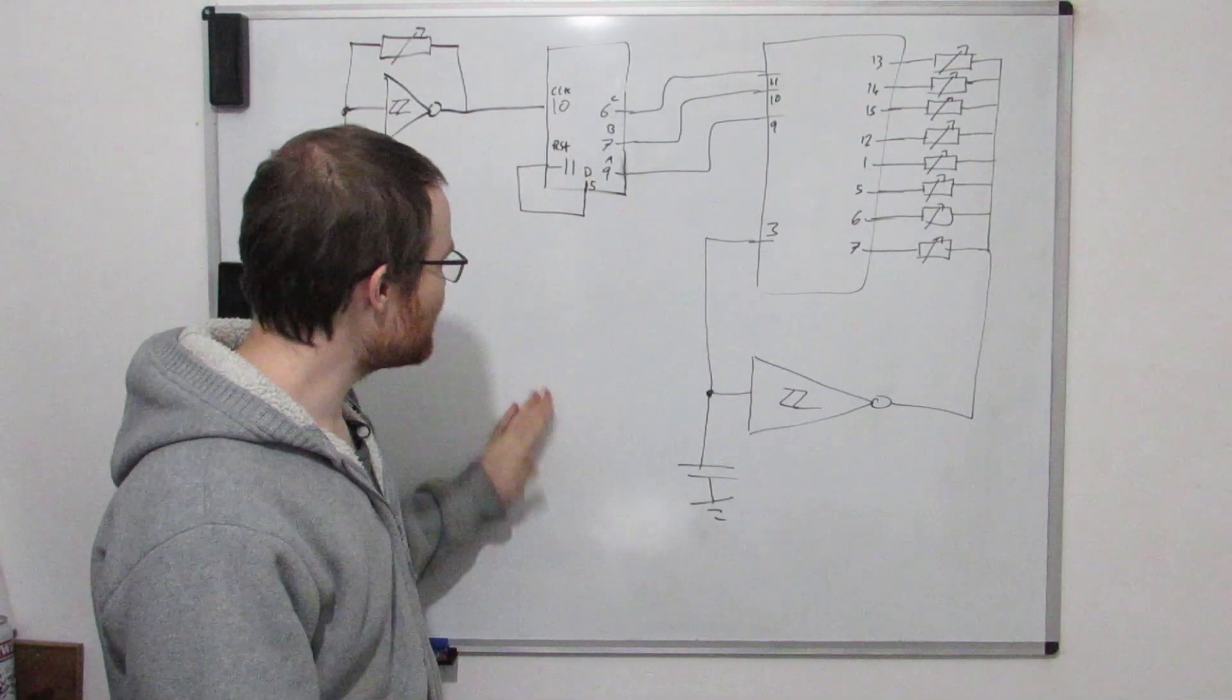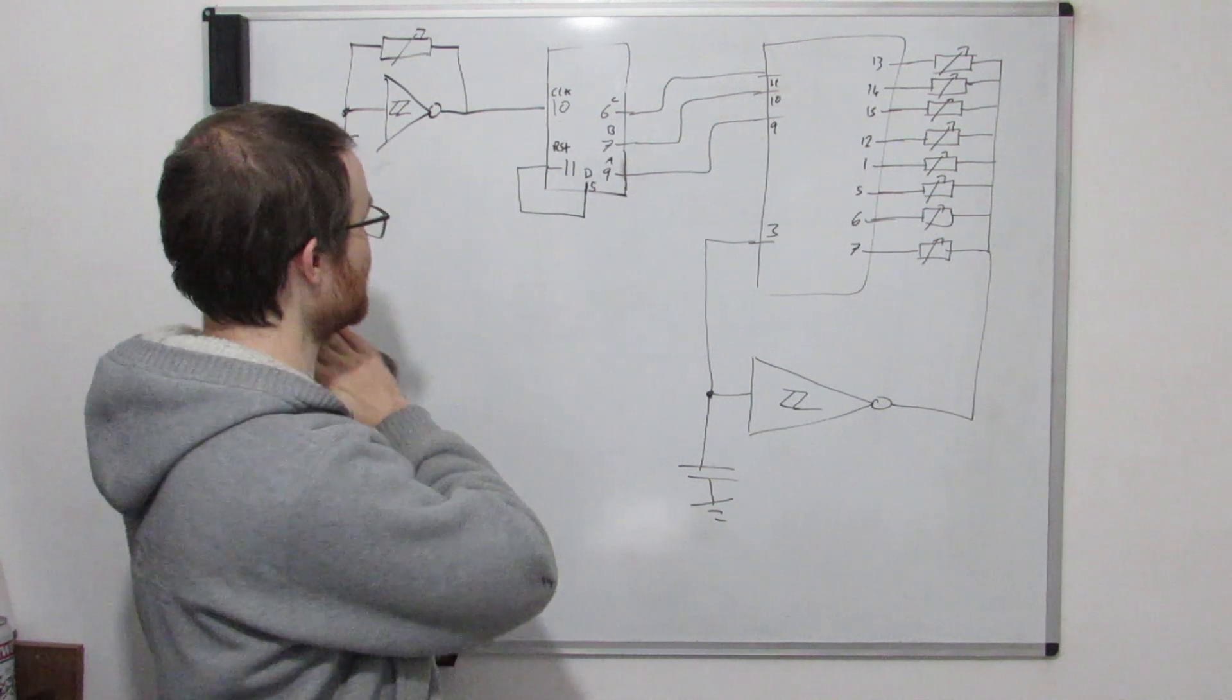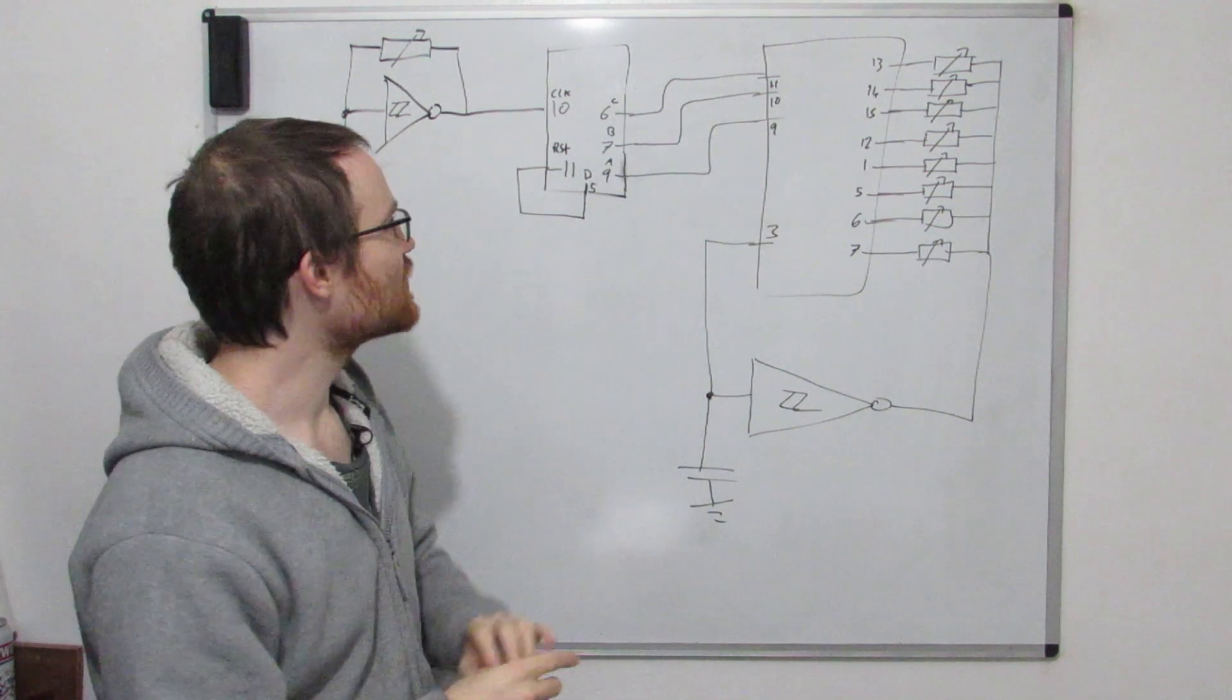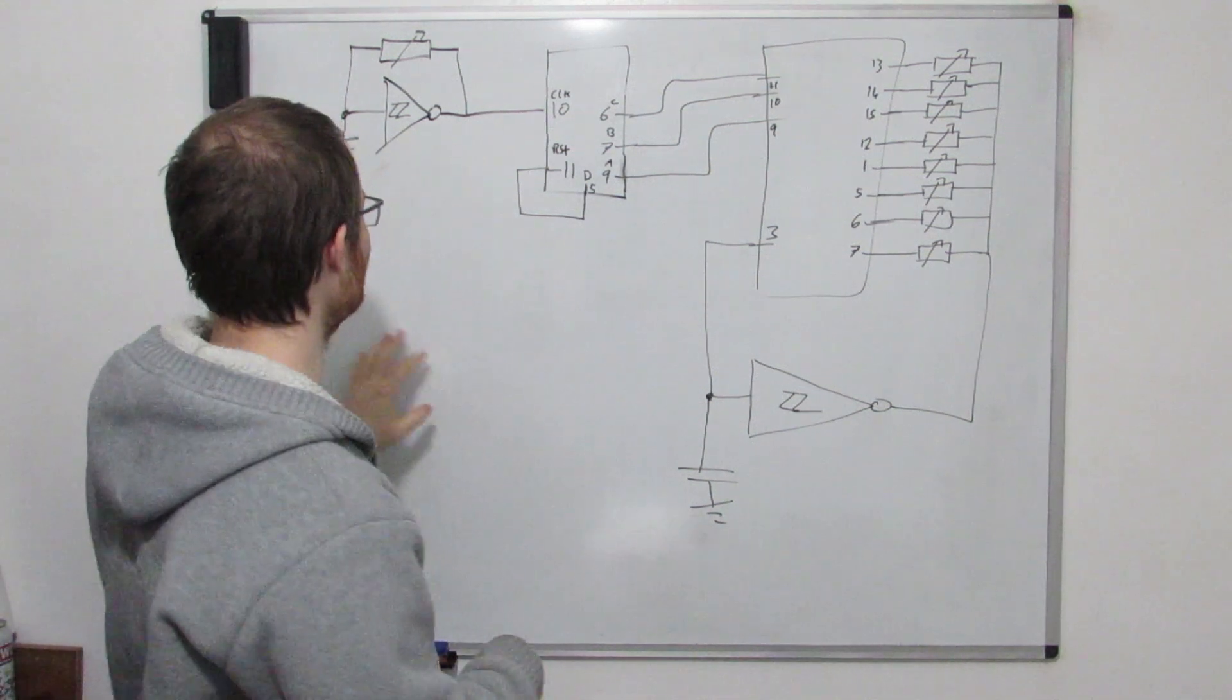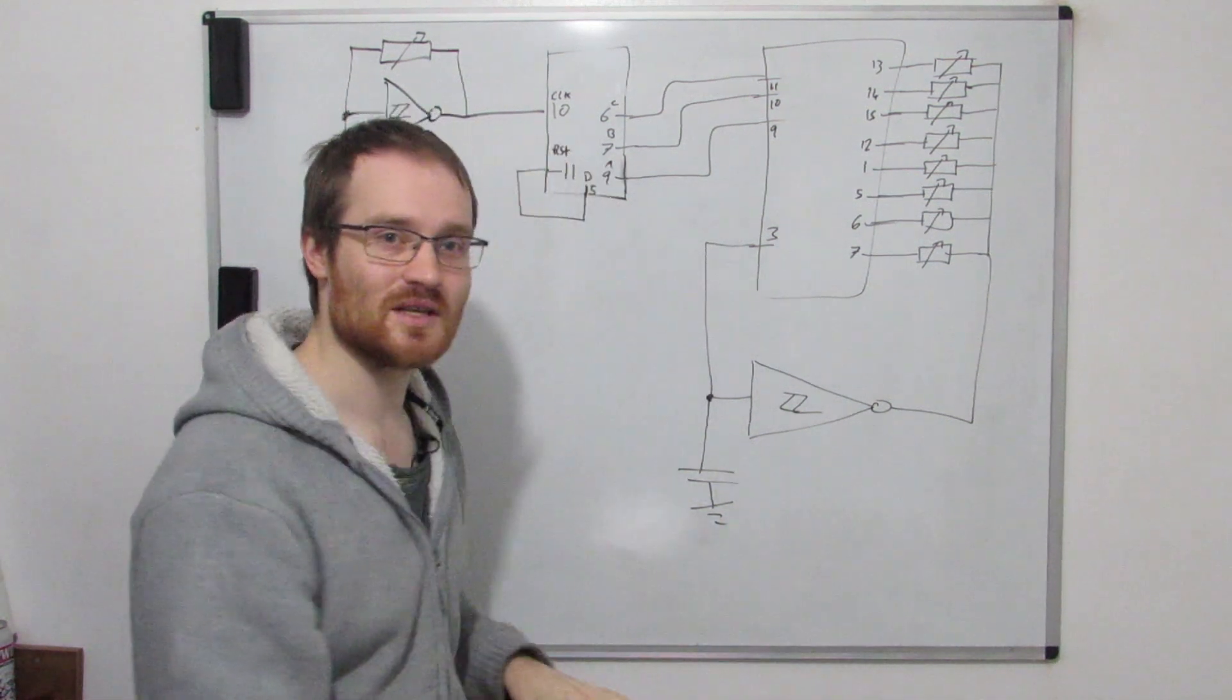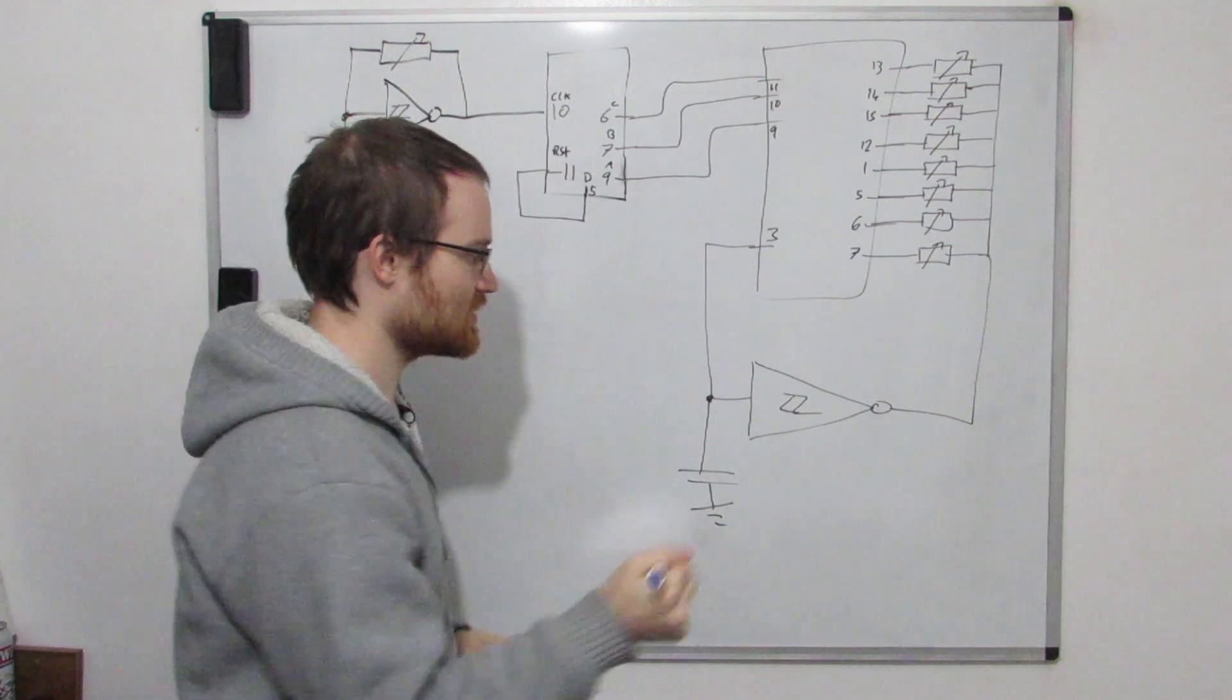But don't worry too much because we're gonna come back to this when we've got a little bit more understanding and build something that's a bit more involved. So I'm gonna draw it up on the board and we'll go through it. Right, so this is the schematic and now I know this looks a lot more complicated compared to what we did before. We're gonna go through it bit by bit and we're gonna see that it's just what we were doing before but just with this extra chip changing these resistors.